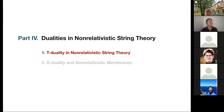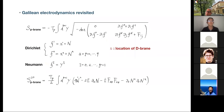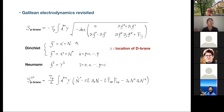Q: Galilean electrodynamics can be obtained from null reduction of Maxwell. Does that suggest this whole story of the non-relativistic open string can be gotten from a relativistic open string? A: I think the short answer is yes. The exact connection is that non-relativistic open string theory is T-dual to the DLCQ of open string theory — related to the null reduction but put on a compactified circle, so you can talk about T-duality.